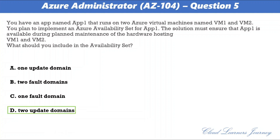The correct answer is 2 update domains. Microsoft updates, which Microsoft refers to as planned maintenance events, sometimes require that VMs be rebooted to complete the update. To reduce the impact on VMs, the Azure fabric is divided into update domains to ensure that not all VMs are rebooted at the same time.